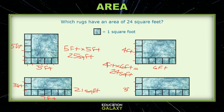Over here we have one, two, three feet and across the bottom one, two, three, four, five, six, seven, eight feet and three times eight is 24, so this one is also 24 square feet. So two of the rugs match the 24 square feet.